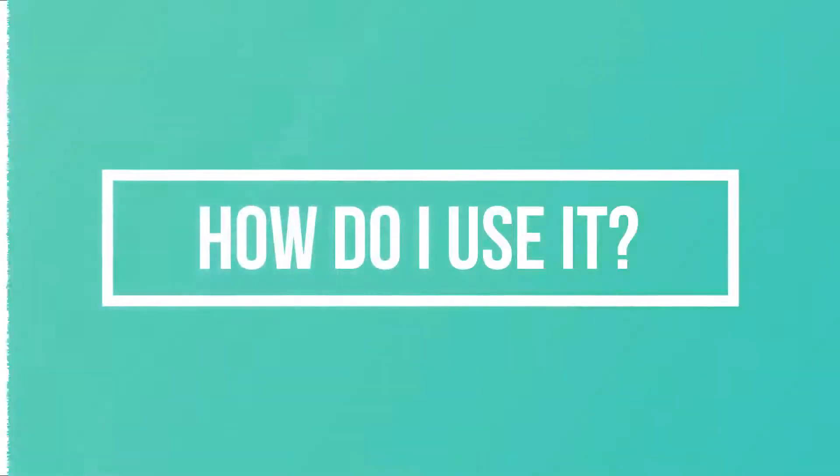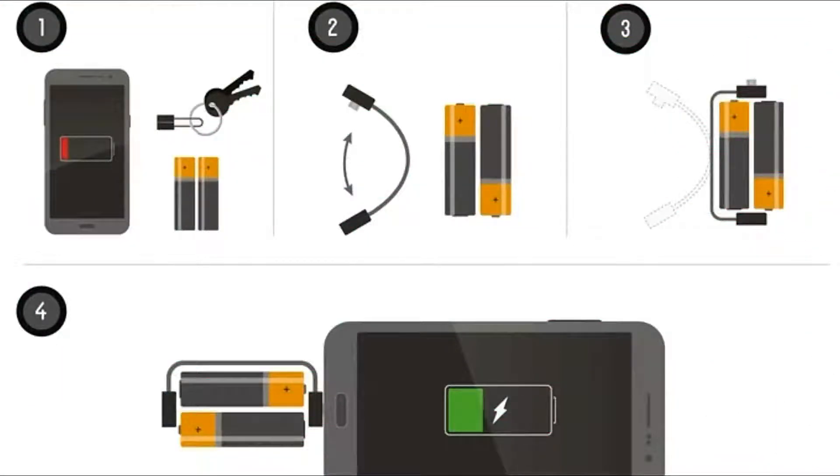How do I use it? It couldn't be easier. When not in use, the Nipper is always with you, attached to your key ring or in your pocket or bag. When you need to charge your phone, simply open the Nipper, place 2 AA batteries between the magnets and connect it to your phone.